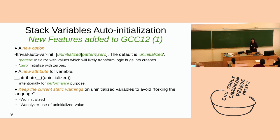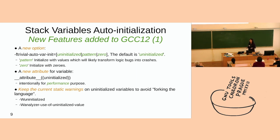During the GCC 12 timeframe, there was a lot of discussion on this feature, and we finally agreed on a new option with corresponding new attribute. At the same time, we tried to keep the current static warnings untouched to avoid complaints about forking the language. The new option has three values: the default is uninitialized, which is the current behavior. The two other levels are pattern initialization and zero initialization.